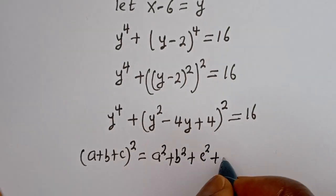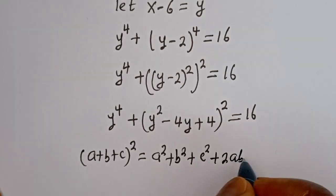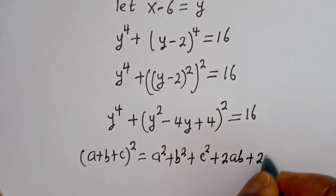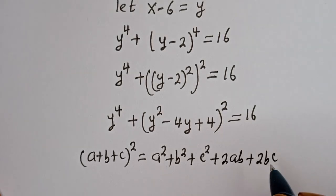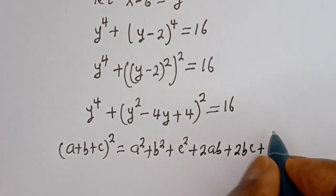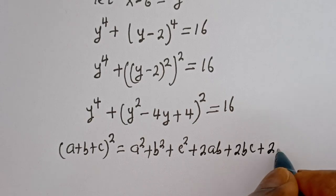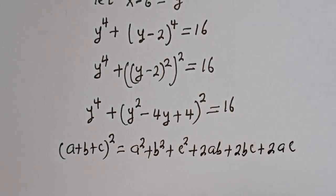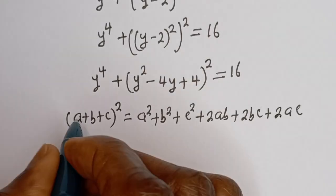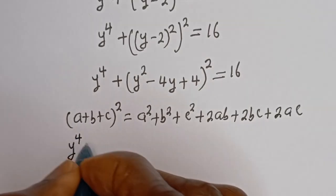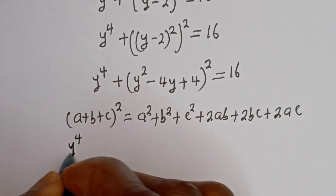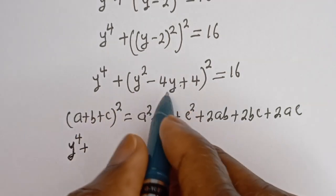Plus 2ab plus 2bc plus 2ac. Then applying this expansion rule to y⁴ plus (y² - 4y + 4) squared.